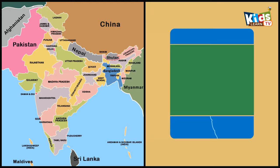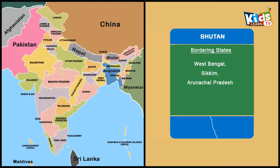The Indian states West Bengal, Sikkim, Arunachal Pradesh and Assam share the border with Bhutan. The border length is 699 km.